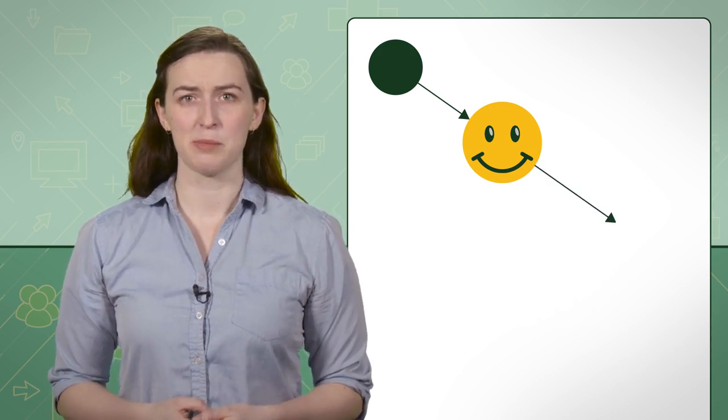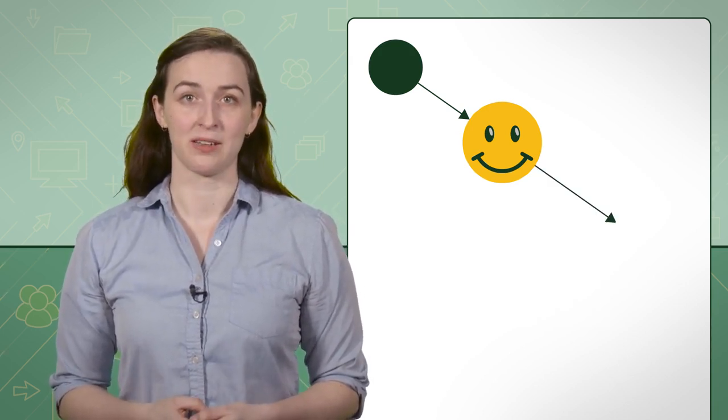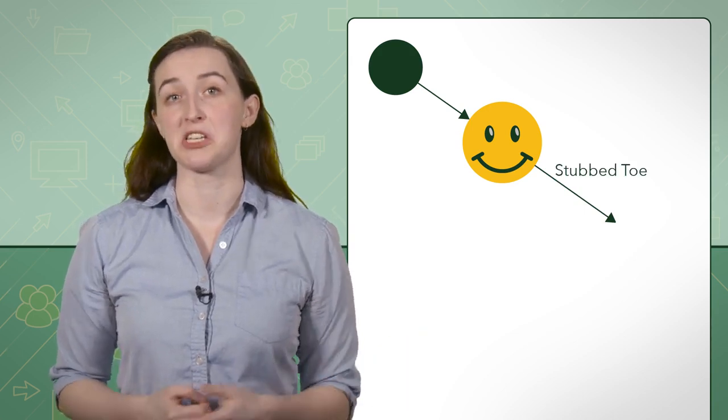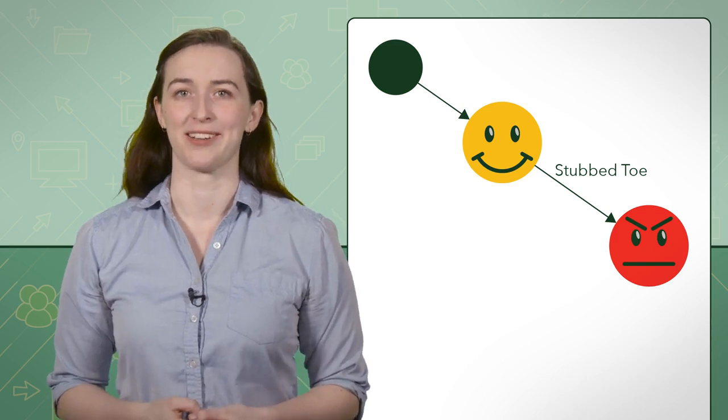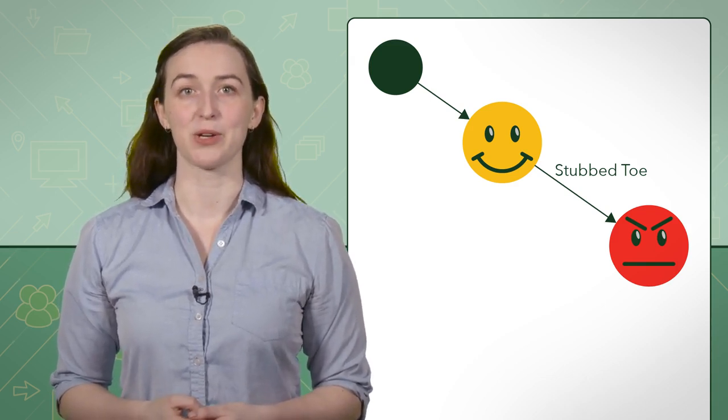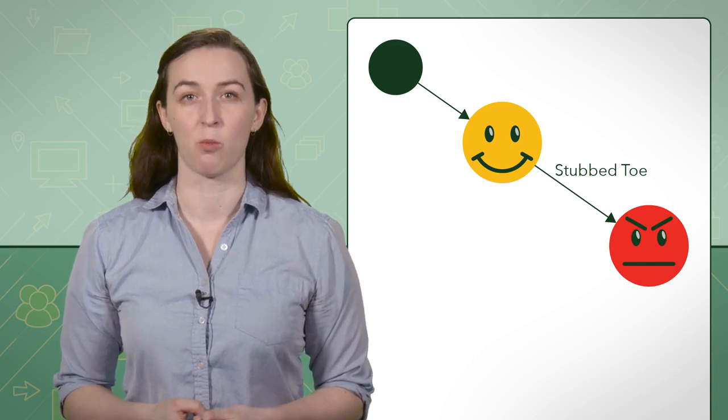During the day, maybe something happens to anger this person. Let's say that the person accidentally stubbed their toe on a table. This would change their state from happy to angry. In state diagrams, arrows are used to represent events to transition from one state to another.